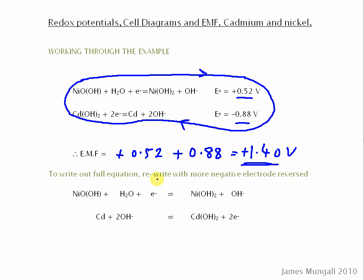To write out the full equation, I recommend rewriting the half equations with the more negative electrode reversed. The nickel half equation was more positive, so that stays exactly the same. The cadmium one is rewritten with everything on the right now on the left and vice versa. Now to combine these half equations, the electrons must cancel — there are two on one side, so we need two on the other, meaning we double everything in the nickel half equation.